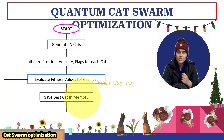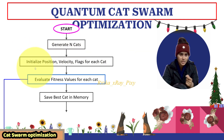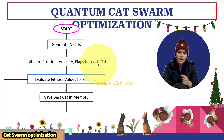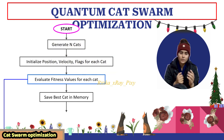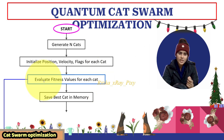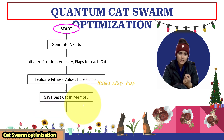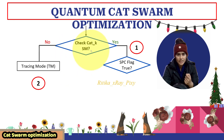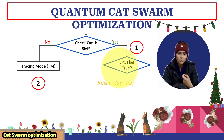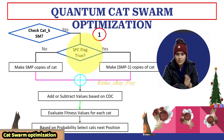Now you can see the flowchart for cat swarm optimization algorithm. First, you will generate N cats randomly in the search space, initialize their position, velocity, and flag for each cat. The flag represents whether the cat is in seeking mode or tracing mode. After that, for each cat we will calculate the fitness value, rank the cats from best to worst, and save the best cat in memory as the optimal solution.